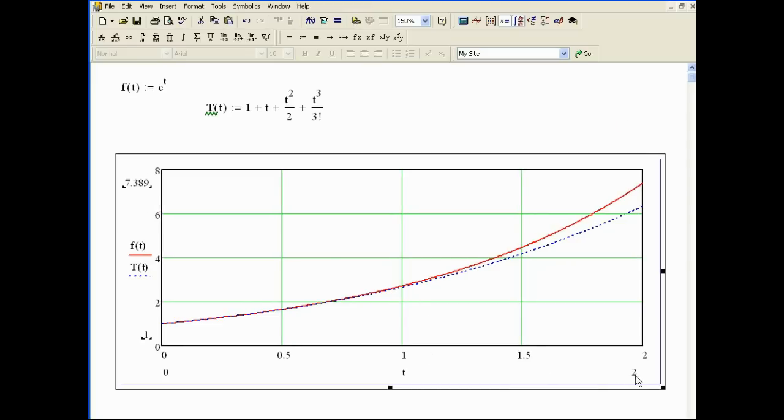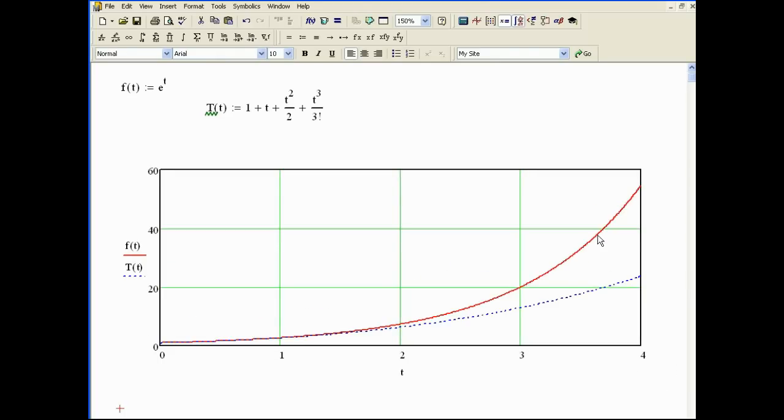Well, how much does it increase? Let's bump this up a little bit. Perhaps we can go from 0 to 4. And you can see the error starts to get very large here.